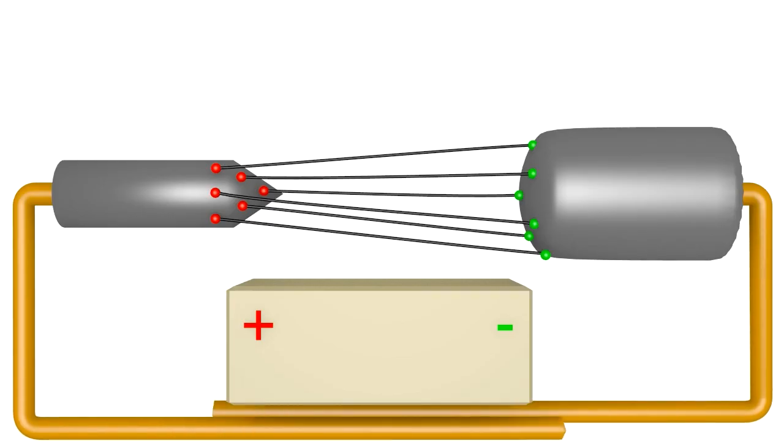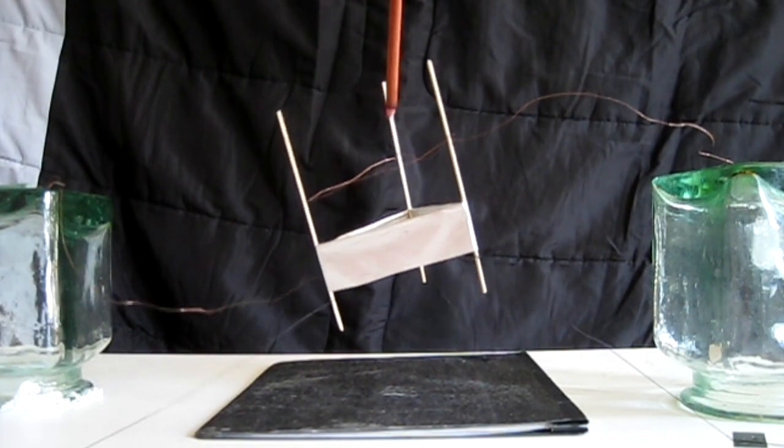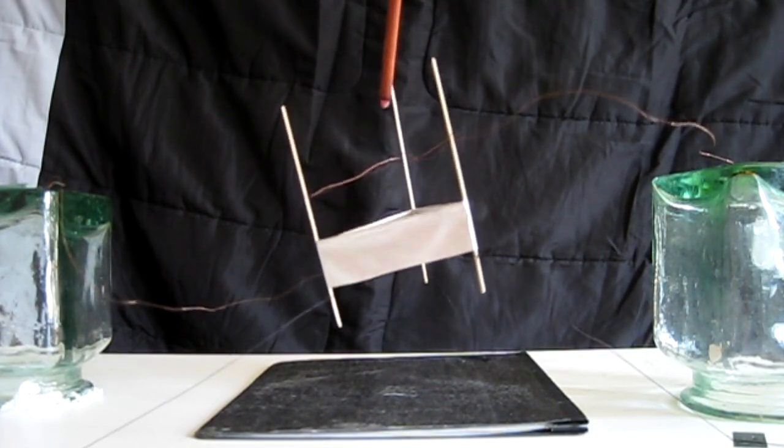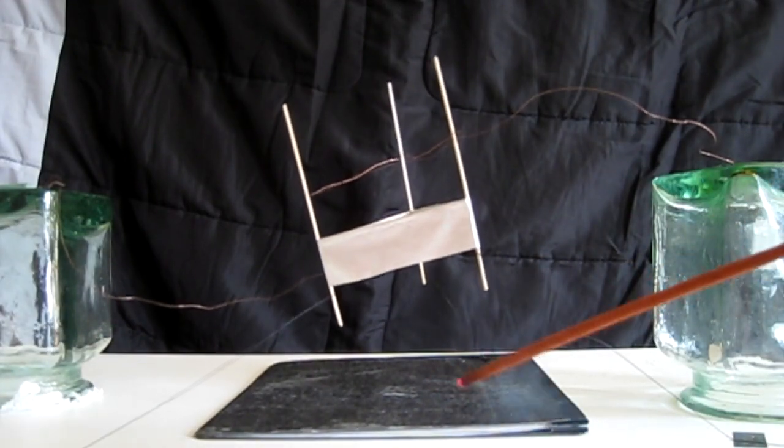The last point to mention is that it also works if you connect the negative to the sharp object and the positive to the smooth object instead. In fact, here the very thin wire is connected to the negative and the lifter is flying. There are some differences in what happens, but the basic idea is the same.